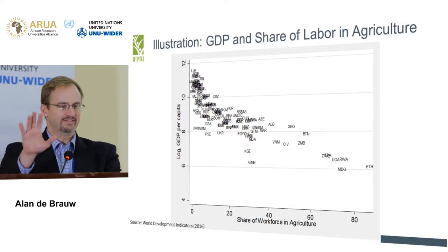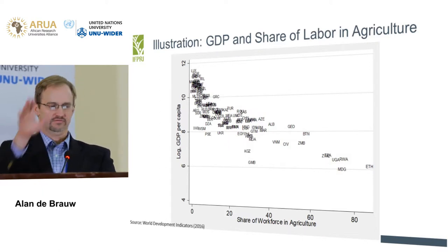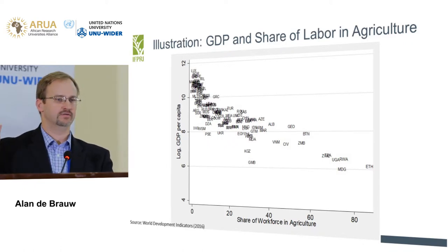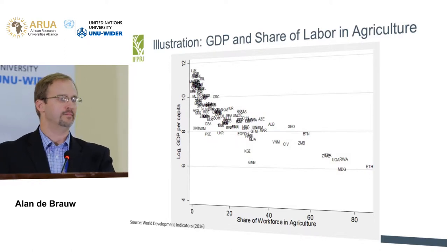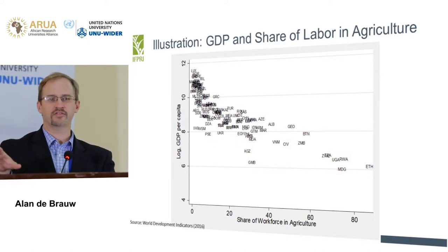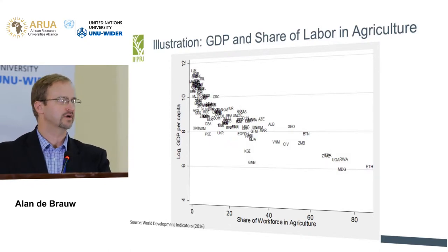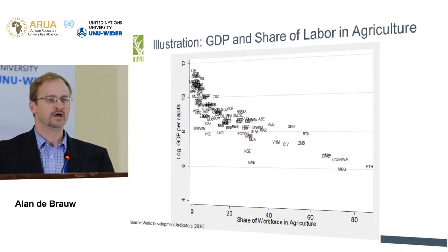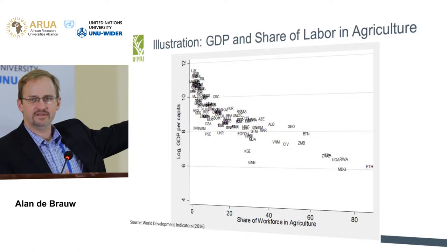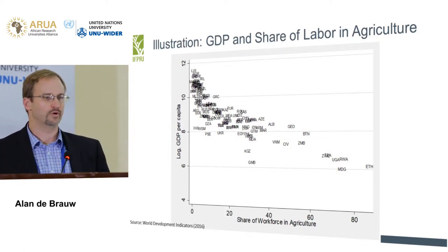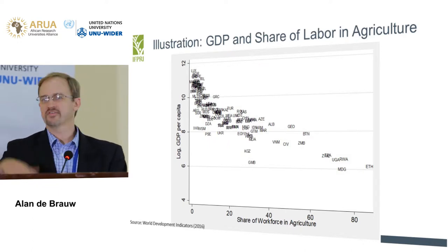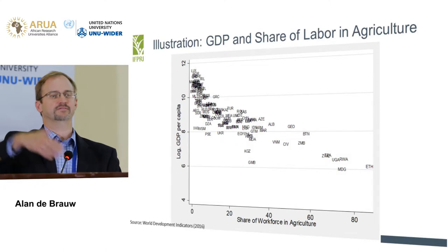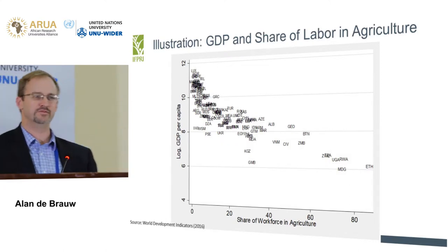This is another look at it — a cross-section that anyone can pull from the World Development Indicators. It took me literally 10 minutes to make. I first saw a similar graph in graduate school — Taylor and Martin had it in the Handbook of Agricultural Economics on migration and agriculture in 2001. This is the 2016 data and it has exactly the same pattern, so this relationship is still there.